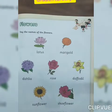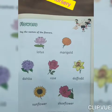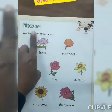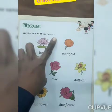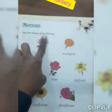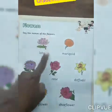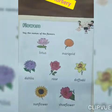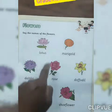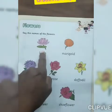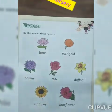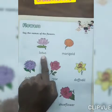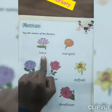Page number 41. Flowers. Say the names of the flowers. Look at here everyone. Which flower is this? Lotus. And which color of lotus? Pink and white.